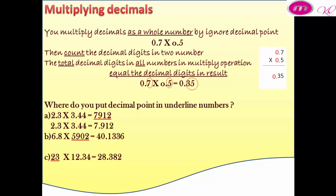For number B, we have one number with one decimal digit. That means the second number must have three decimal digits, and the answer equals 5.902.